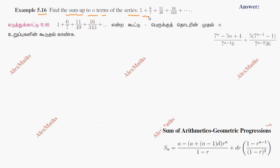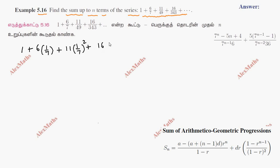The series is 1 plus 6 by 7 plus 11 by 49 plus 16 by 343 dot dot dot, which can be written as 1 plus 6 into (1 by 7) plus 11 into (1 by 7) squared plus 16 into (1 by 7) cubed dot dot dot